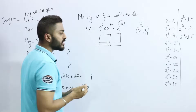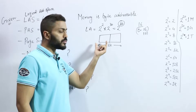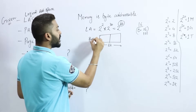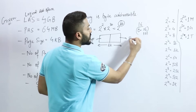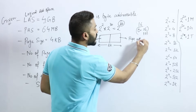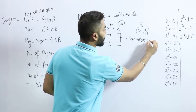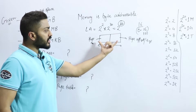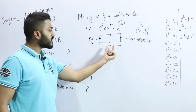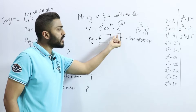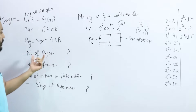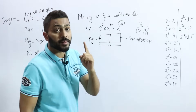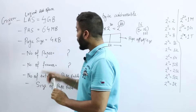Now we know that in a logical address, some MSB bits are used to represent the page number, and LSB bits are used to represent the page offset (page size). The total is 32 bits, but how many bits for each part cannot be found directly — for that we need to go to the page size. The second given value is page size: 4 KB.